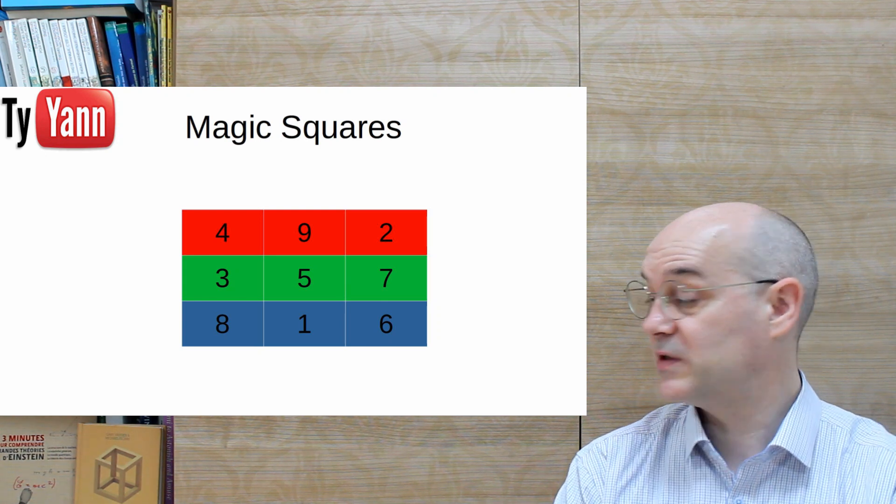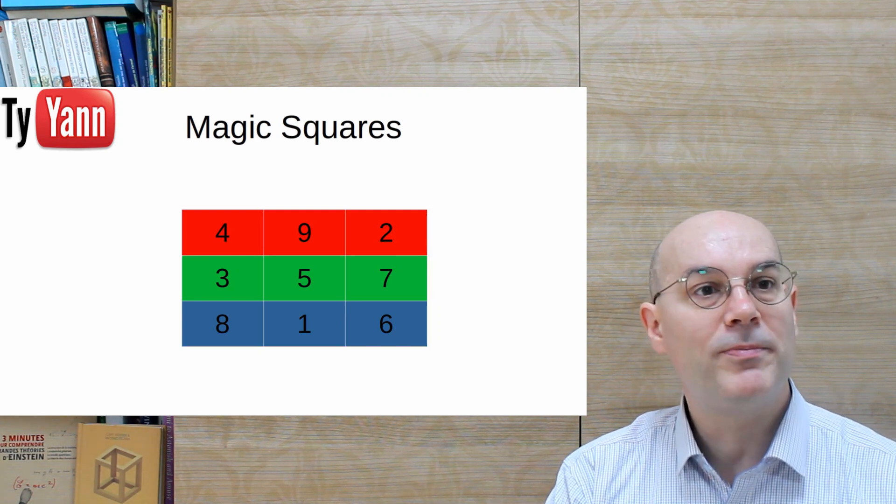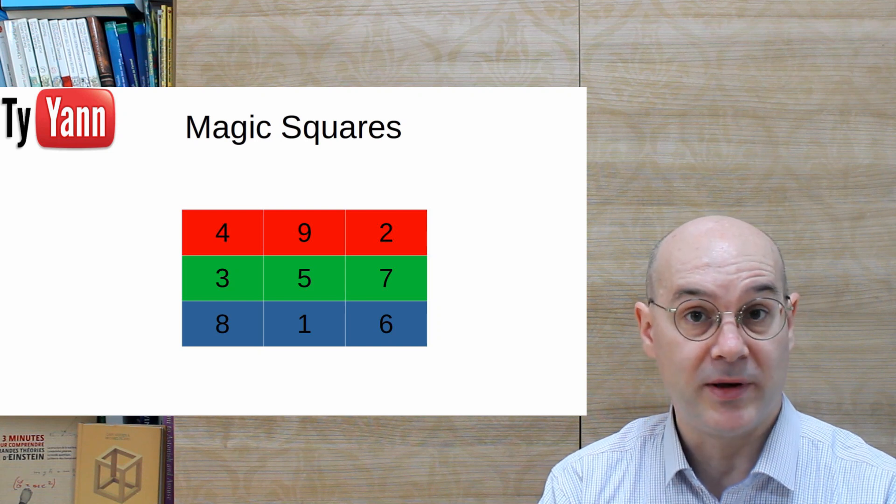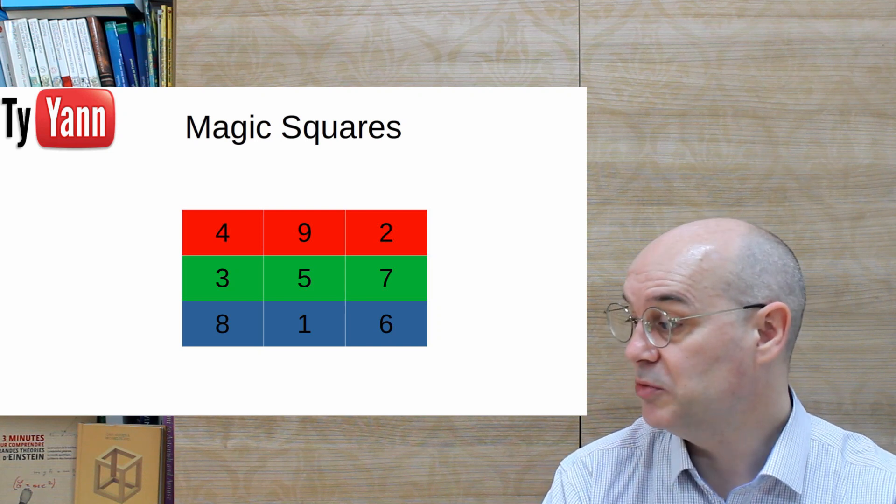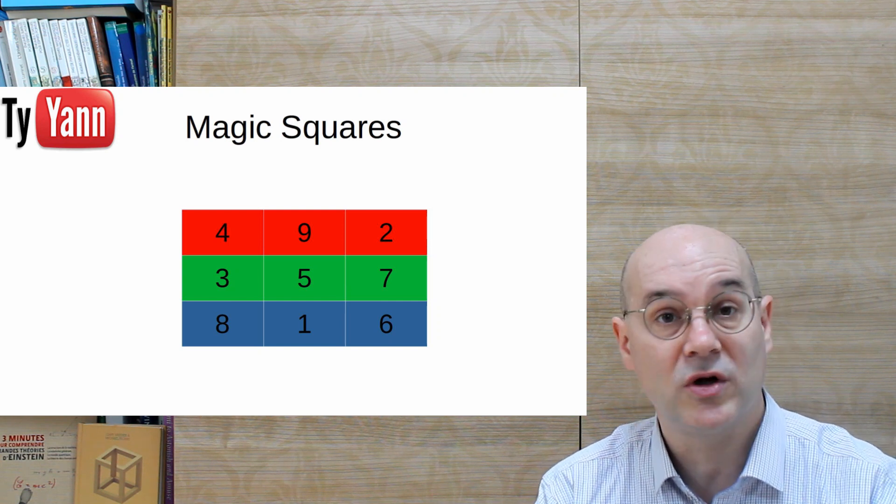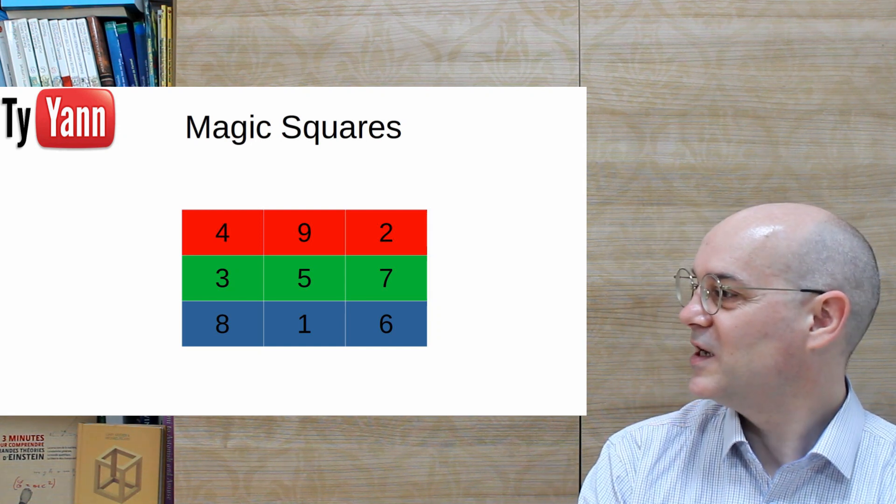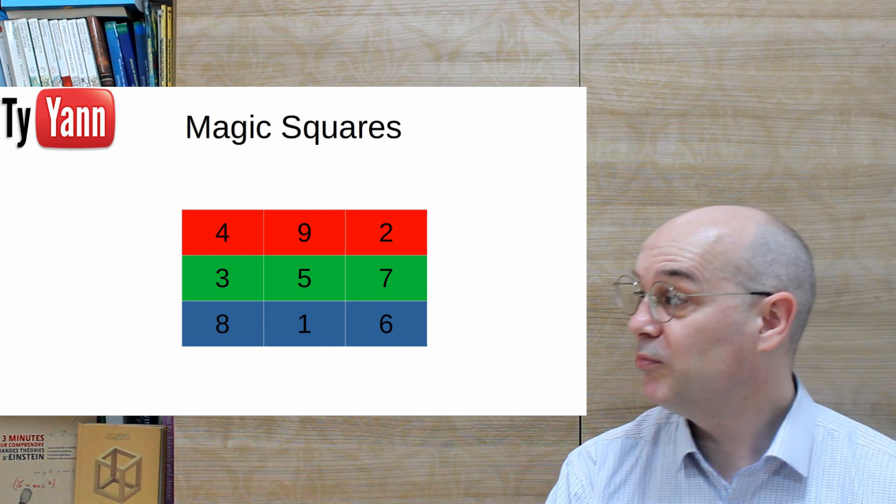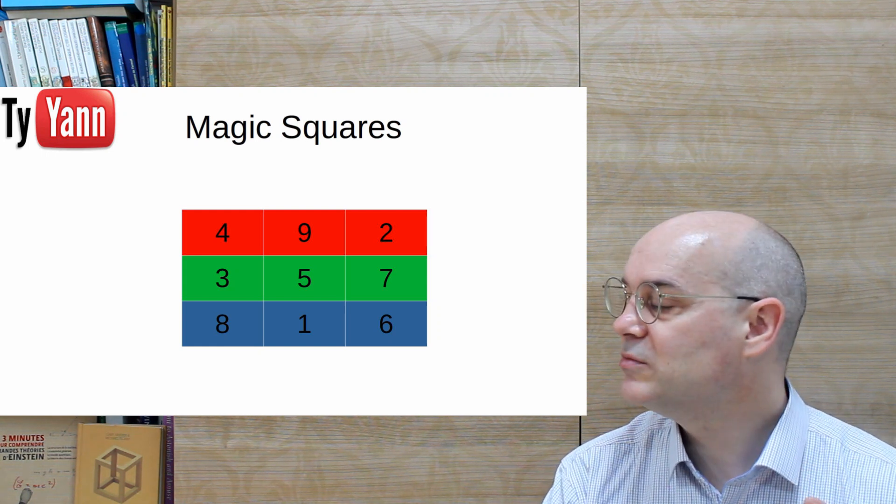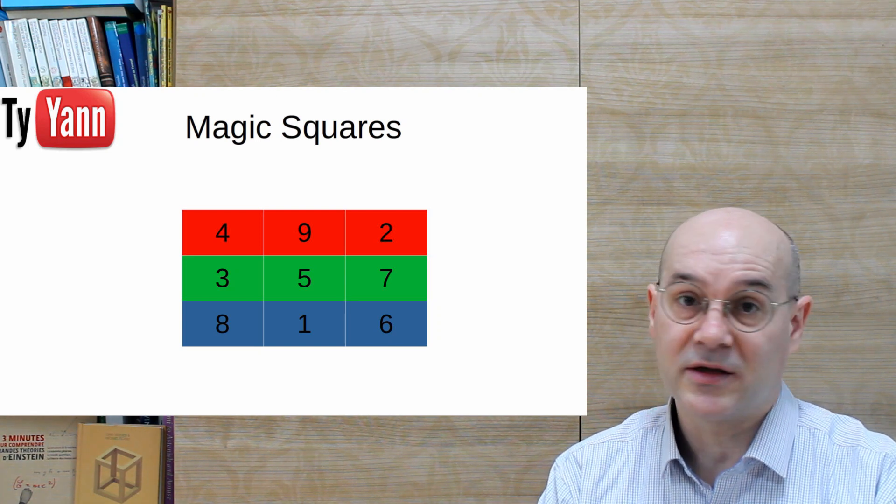So you choose one color set. For instance, you choose green and I choose red. And we play our cards at random. We don't know which card we're gonna play, as long as it's our color. So you might end up playing three, five, or seven without even knowing which one you're gonna play. It's just anyone. So now, the question is, which of the sets is stronger? Is it red? Is it green? Who has the most more chances to win, winning being having a highest number?